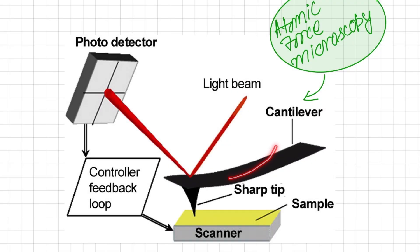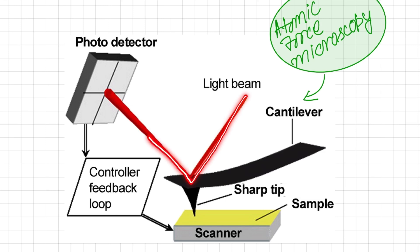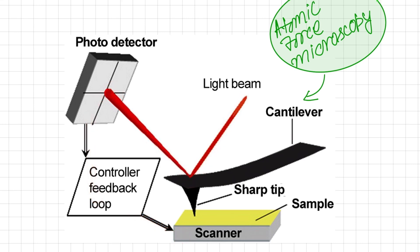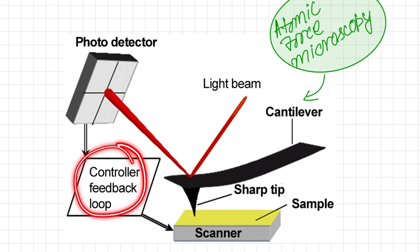The nanoscale tip is attached to the cantilever forming a spring-like structure. As the tip contacts the surface, the cantilever bends, and this bending is detected using a laser diode and a split photodetector. The light beam moves due to cantilever movement and is reflected onto the photodetector. This photodetector is connected to a control feedback loop and scanner, and the deflection of the light beam at different positions on the photodetector builds a complete image.